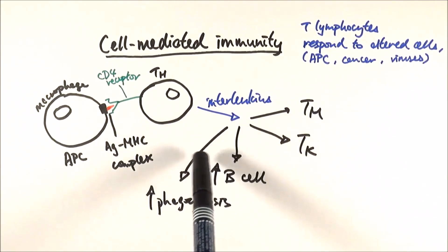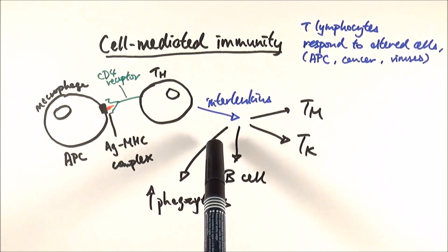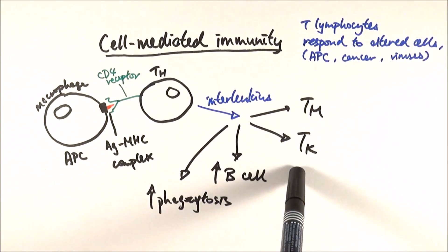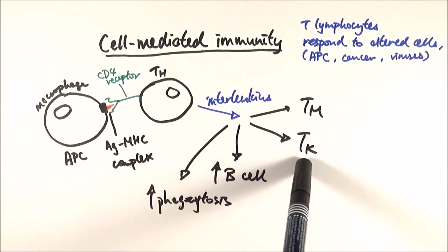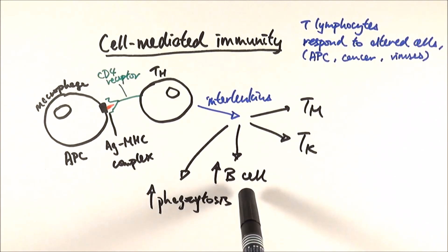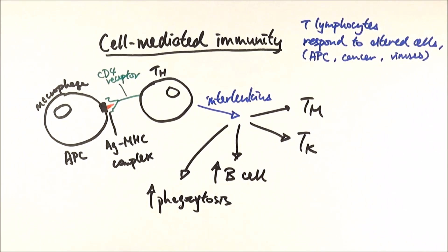The T helper cell proliferates and differentiates into T memory cells to memorize the antigen, and T killer cells to kill those pathogens and altered cells. It can also signal B cells to proliferate in preparation for the humoral response, and instruct macrophages to increase phagocytosis to kill the pathogens. And that is cell-mediated immunity.